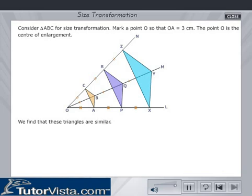We find that these triangles are similar. Therefore, PQ by AB is equal to QR by BC is equal to PR by AC, that is equal to 2. And XY by AB is equal to YZ by BC is equal to XZ by AC, that is equal to 3.